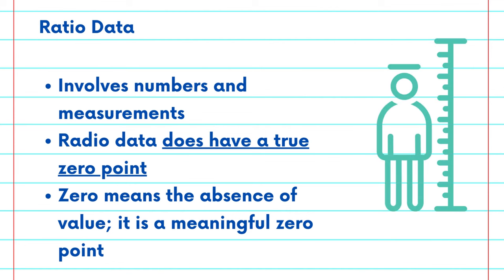For example, when we measure height, a value of zero means absence of height. It's a meaningful zero point.